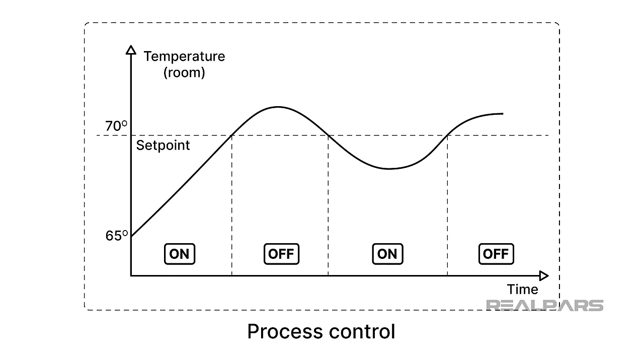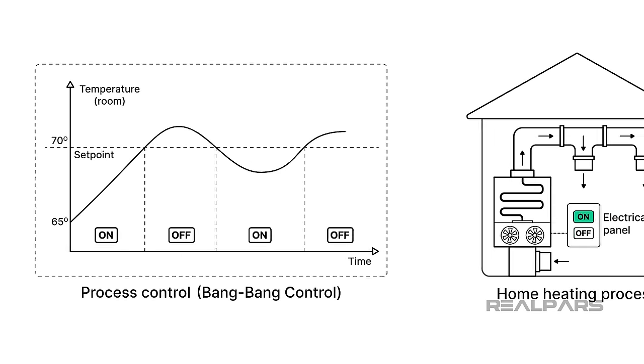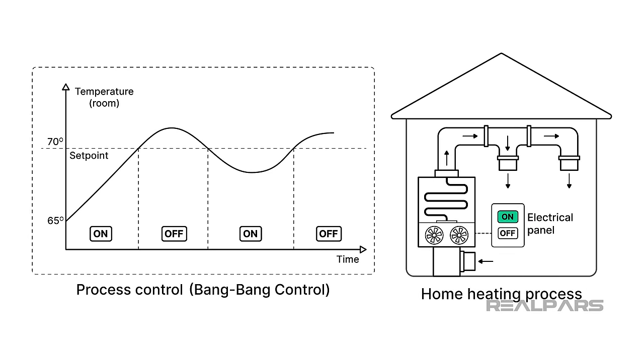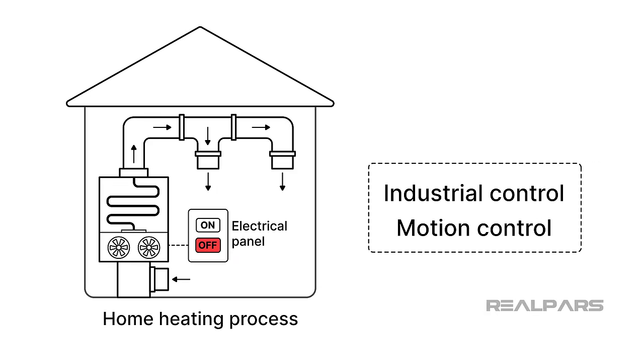Let's start with a discussion about a very basic process control technique called On-Off or Bang-Bang control. This technique is very common and found in applications such as home heating where a furnace is either on or off. What we end up with is a continuous temperature fluctuation around the desired setpoint. On-Off control may be okay for a house, but it's not okay for industrial processes or motion control, as these fluctuations around the setpoint are not acceptable.